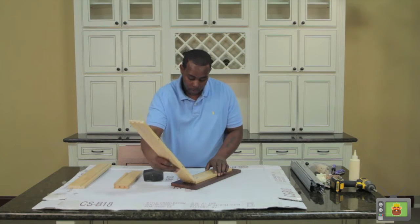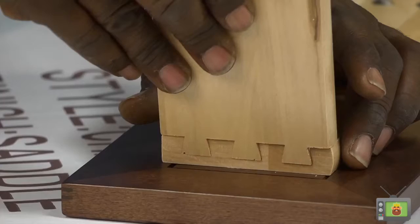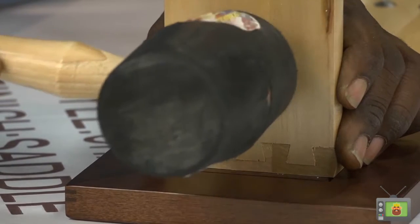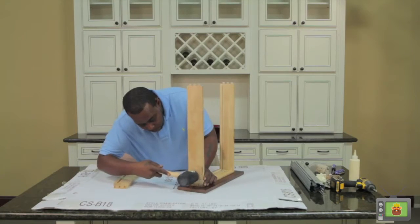Next, take a side panel and tap the dovetail joints together. If you are using a nailer, you can place a brad into all the dovetail joints, but do not place one in the area of the dado.